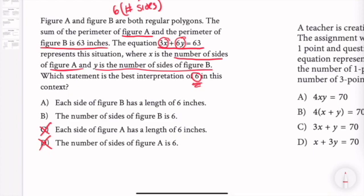Okay, so we're left with A and B. Now the number of sides of figure B is 6. This is incorrect because we're told that y is the number of sides of figure B. So why would we multiply the number of sides times the number of sides? That doesn't really make any sense. That's basically what B is saying.